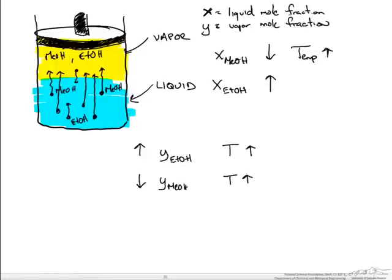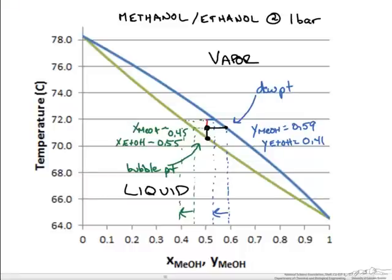What happens if we keep increasing temperature? Going back to the Txy diagram, if we keep increasing from our last point we eventually cross the dew point line and enter the vapor phase entirely. The composition of that vapor corresponds to where we started — an equimolar solution of methanol and ethanol. So we finish with an equimolar solution in the vapor phase. Hopefully this illustrates how a Txy diagram can be used to determine compositions in both the liquid and vapor phases during vapor-liquid equilibrium between two species.